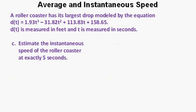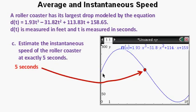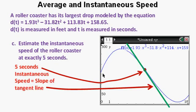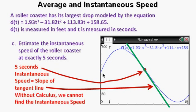Let's go on to part C. Estimate the instantaneous speed of the roller coaster at exactly 5 seconds. Here the graph is marked at exactly 5 seconds. The instantaneous speed is the absolute value of the slope of the tangent line. And without calculus, we cannot get the exact instantaneous speed.